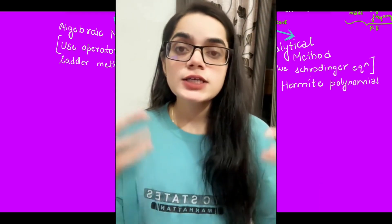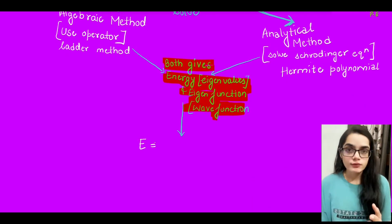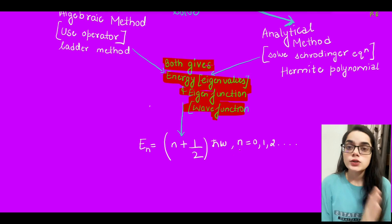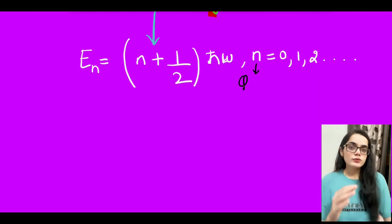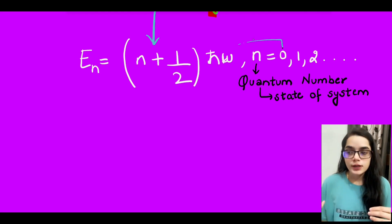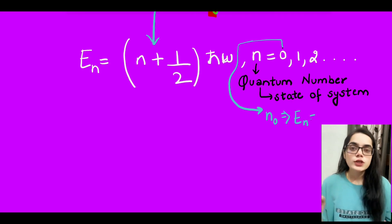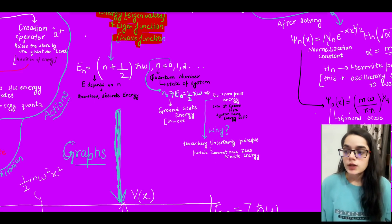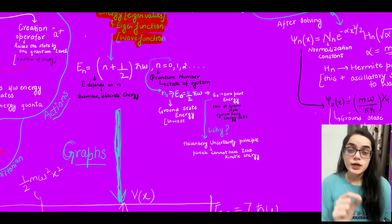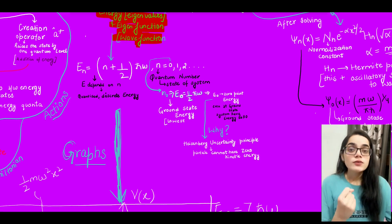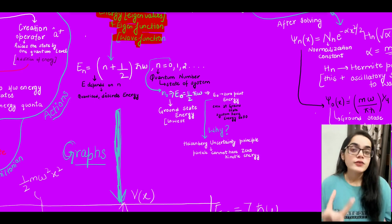Both methods help us find the wave function and energy eigenvalues. The energy eigenvalues are Eₙ = (n + ½)ℏω, where n = 0, 1, 2, 3, … and n is the quantum number that shows the state of the system. At n = 0 (ground state), the energy E₀ = ½ℏω is the minimum — the zero-point energy. This energy is not zero even at the ground state because of the Heisenberg uncertainty principle, which says the particle cannot have simultaneously zero position and zero momentum, meaning it cannot have zero kinetic energy.